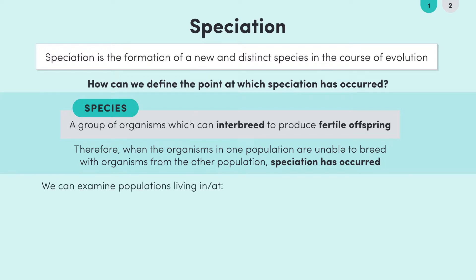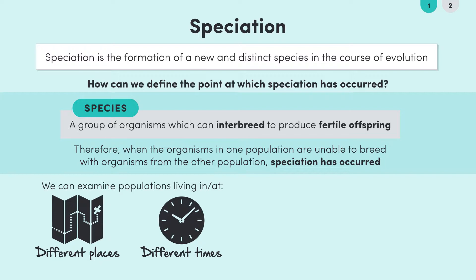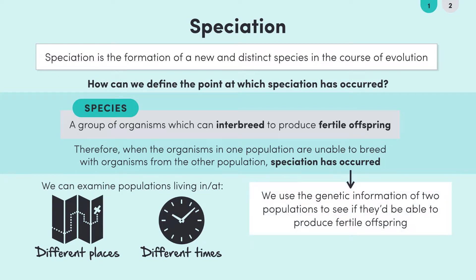We could look at different populations living in different places, like the two squirrel populations in the example above, or at different times, which could involve looking at changes in the gene pool of the same population over thousands of years. Essentially, we use the genetic information of two populations to see if they'd be able to produce fertile offspring together. If not, they can be classed as different species.